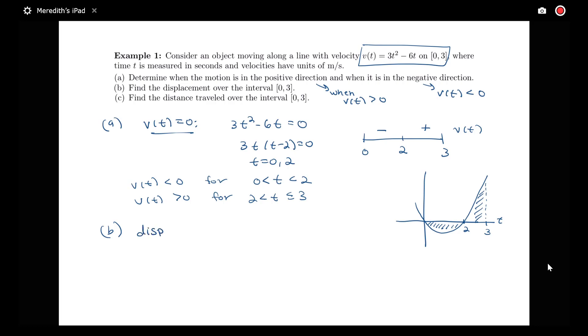Remember that displacement is our net change, or net area, or signed area if you prefer that terminology. Our displacement here is exactly the integral from 0 to 3 of v(t)dt. We want to take into account the sign information and get the difference between our ending position and initial position.